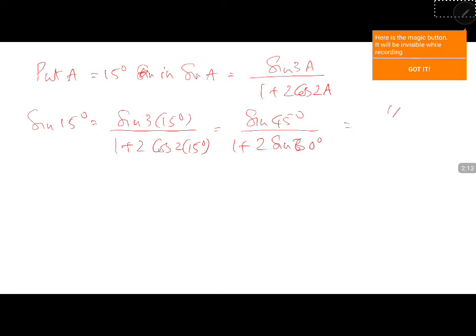Sin 45 is 1 by root 2, and cos 30 is root 3 by 2. This gives (1/√2) divided by (1 + √3).